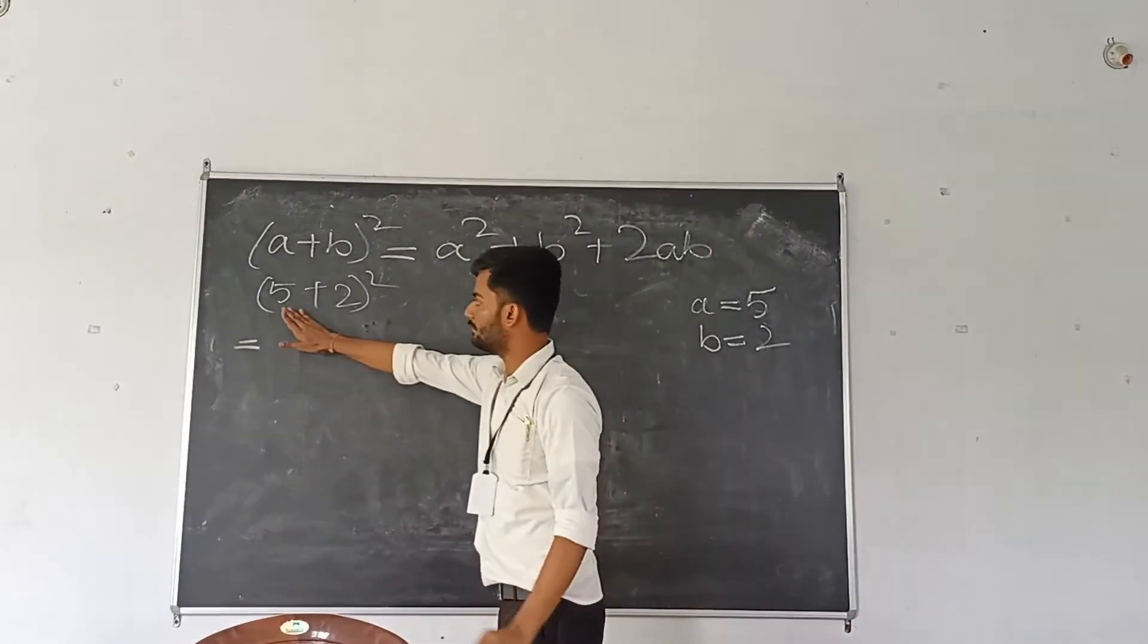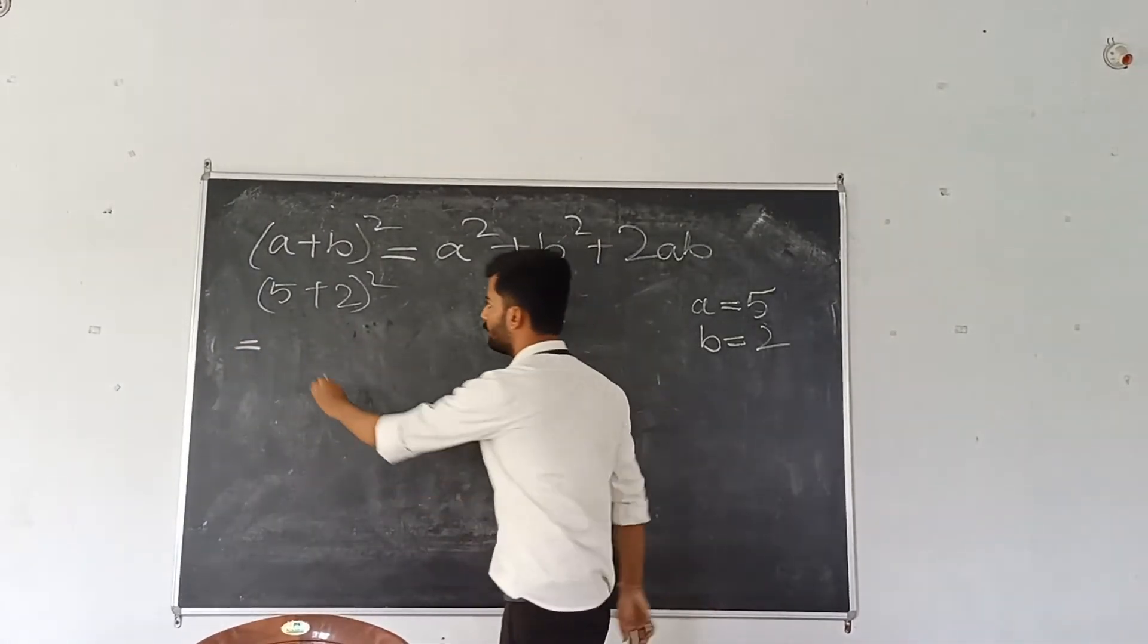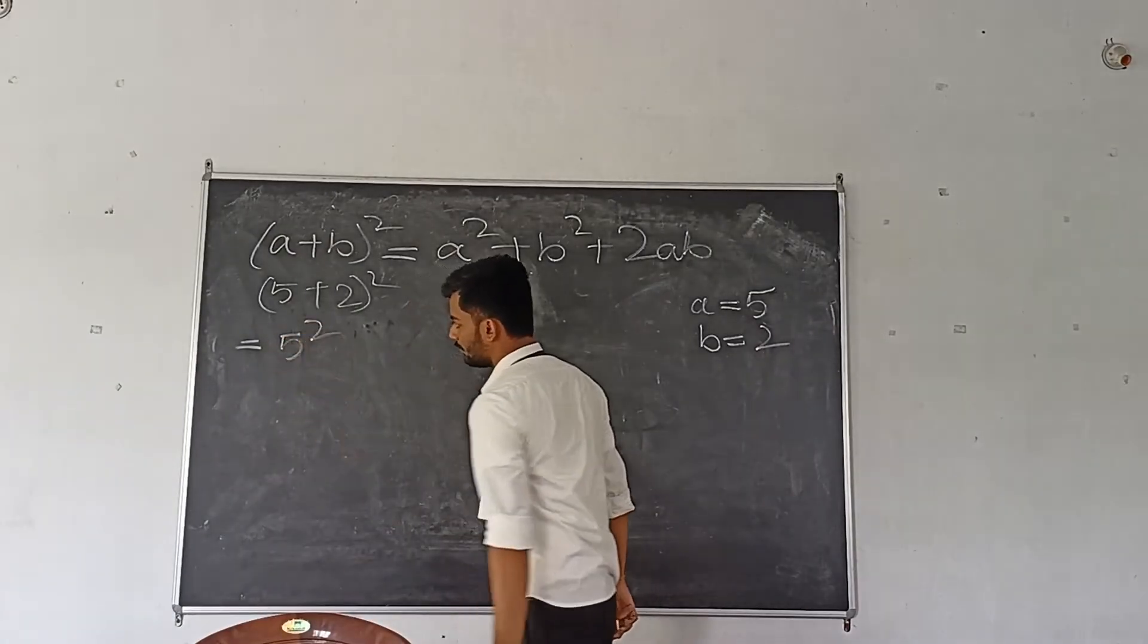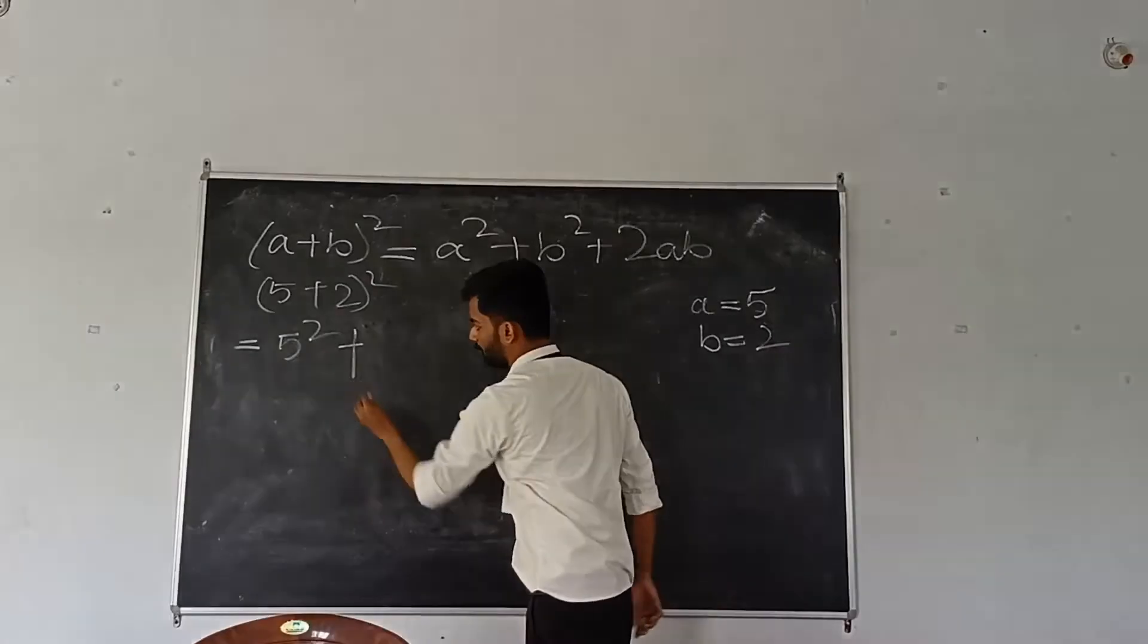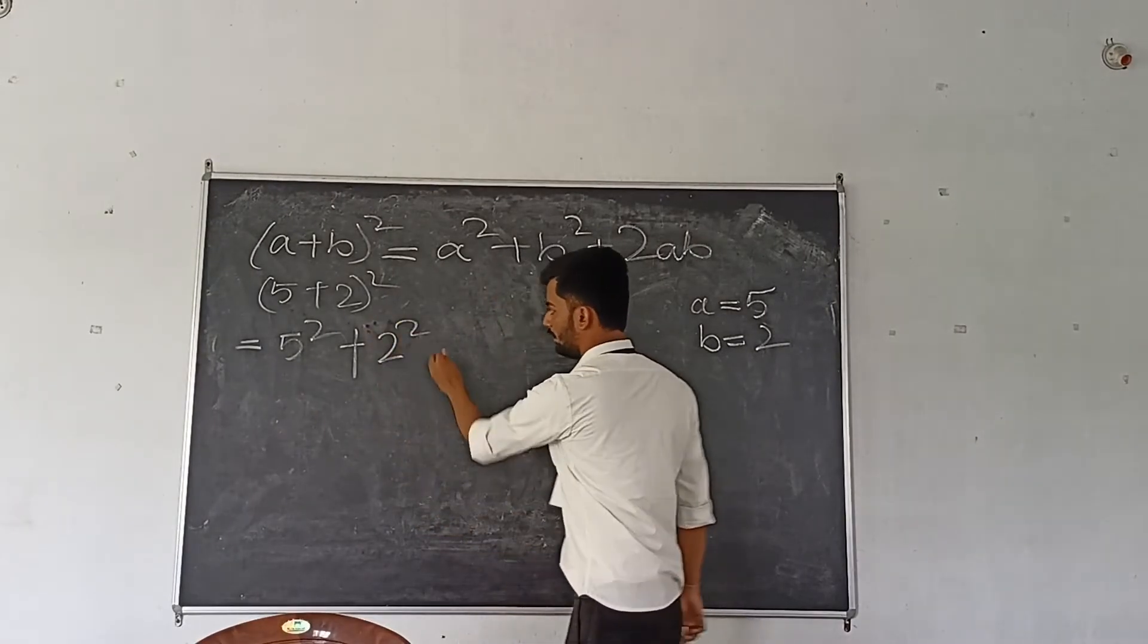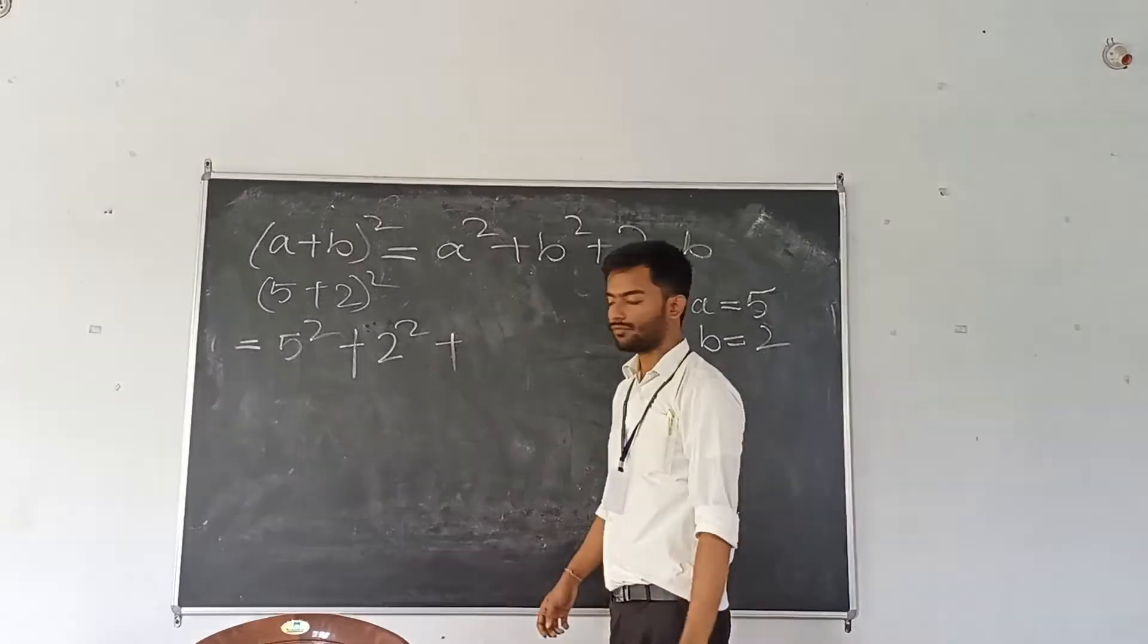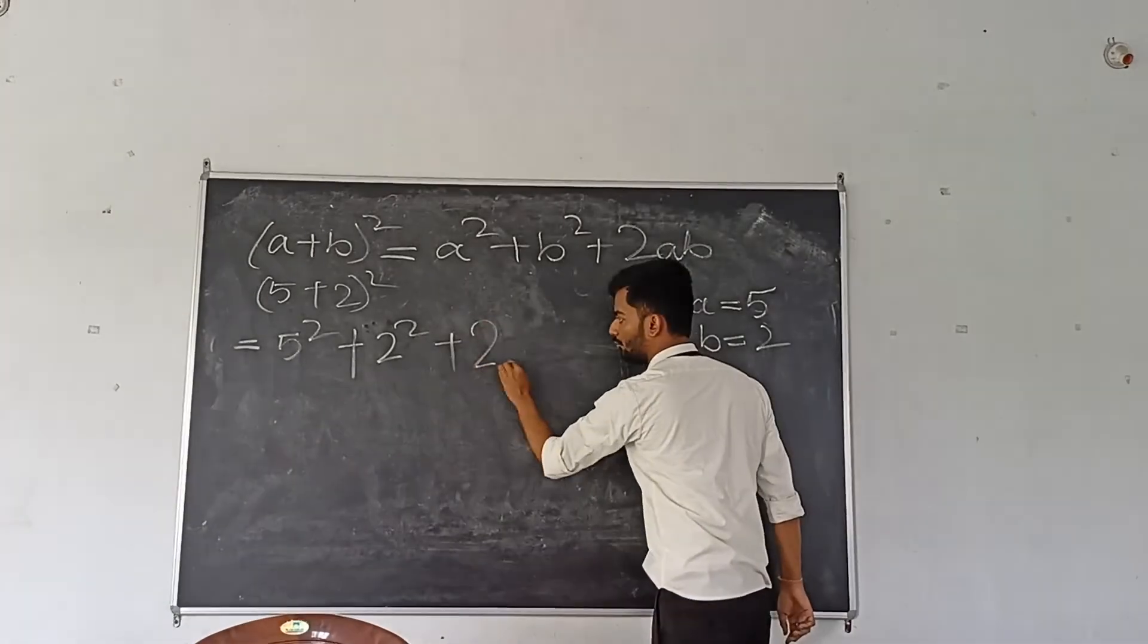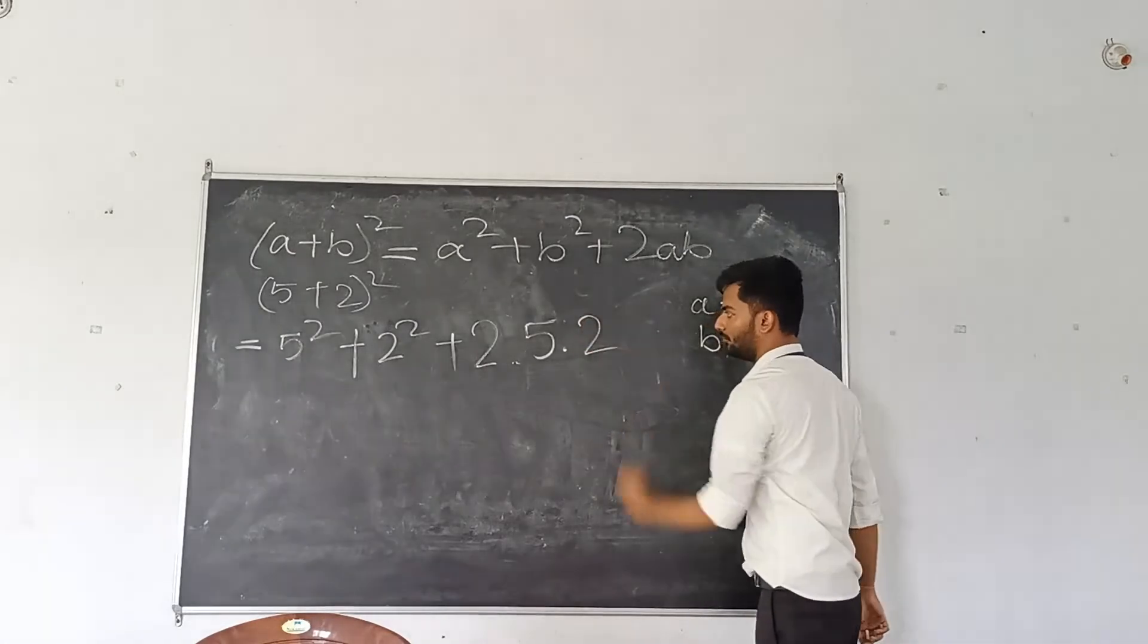we will apply the formula. A is 5, B is 2. It will be A squared plus B squared plus 2AB. So 5 squared plus 2 squared plus 2 times 5 times 2.